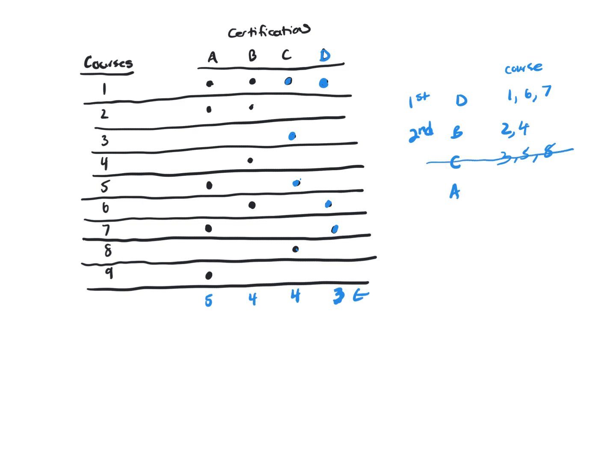She only certified in D and B. So, for A, she needs one and two, but she's already done that. And she needs five and seven. She's already done seven, but she needs five.